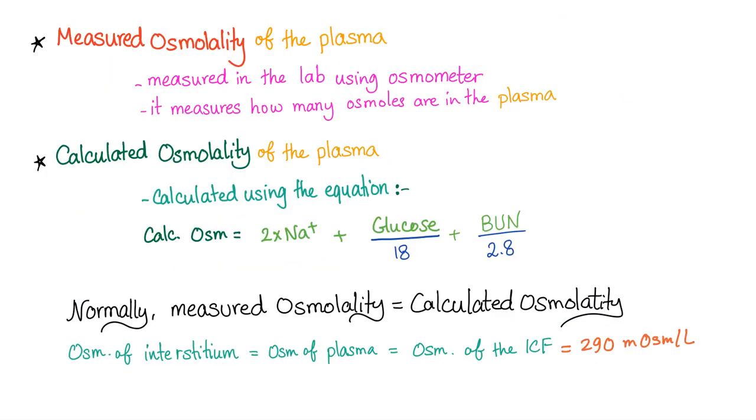What's the difference between measured osmolality and calculated osmolality? Measured is measured. You just send it to the lab and a stupid machine called the osmometer is gonna measure how many osmoles are in the plasma. Sodium, glucose, chloride, calcium, et cetera. However, the calculated osmolality of the plasma, you cannot do this using a stupid machine. You need to rely on your brain using this amazing equation. 2 times sodium plus glucose over 18 plus BUN over 2.8. To make it easier, you can say glucose over 20 and BUN over 3. Normally, measured osmolality should equal calculated osmolality and they should equal 290 milliosmoles per liter.